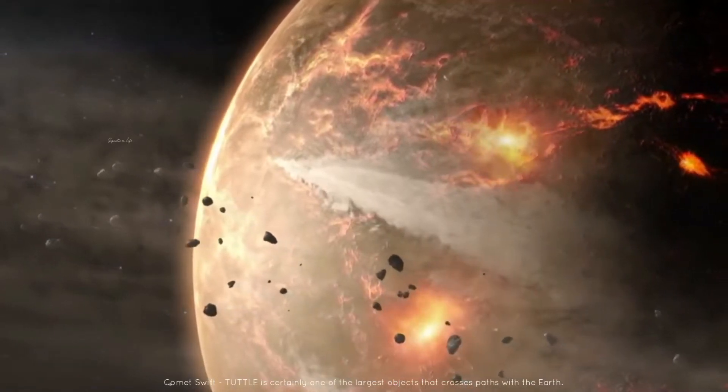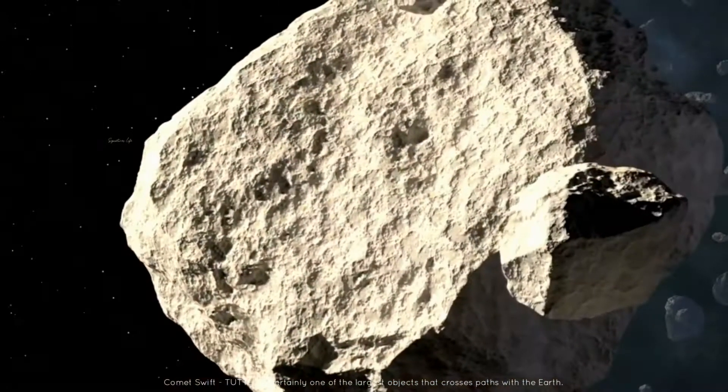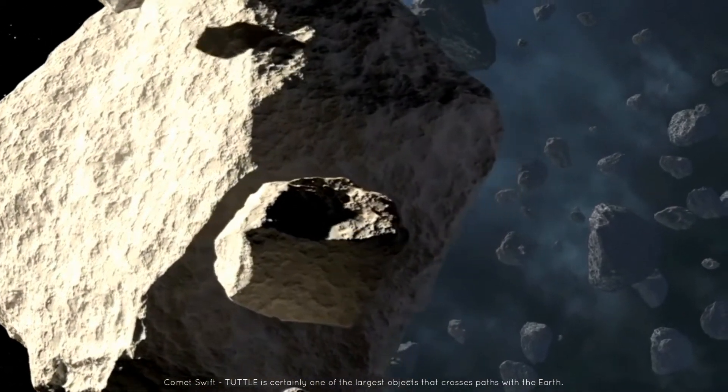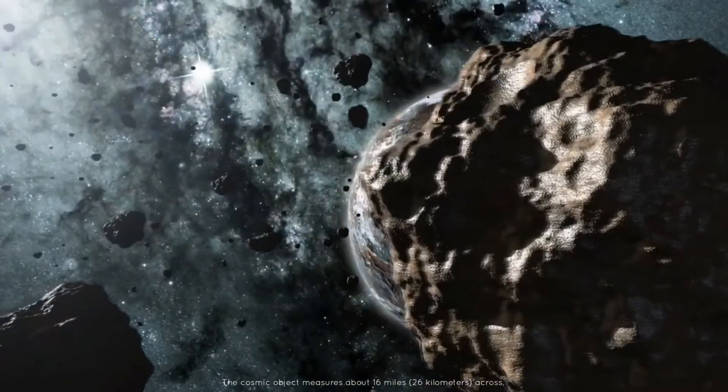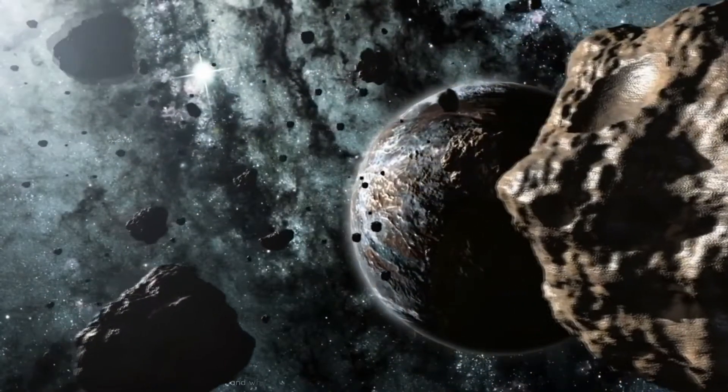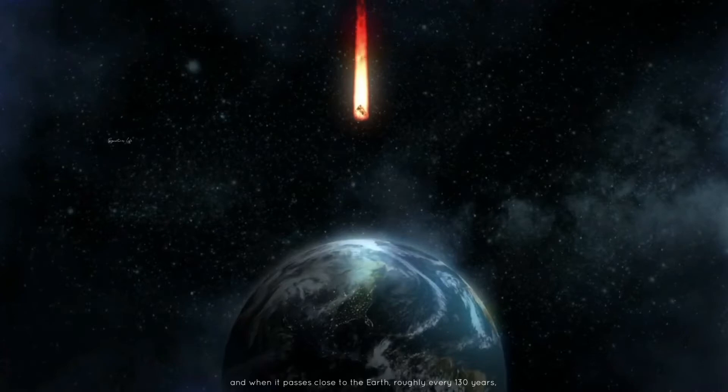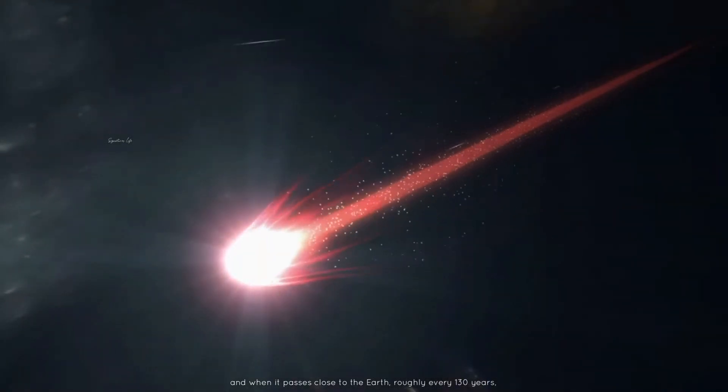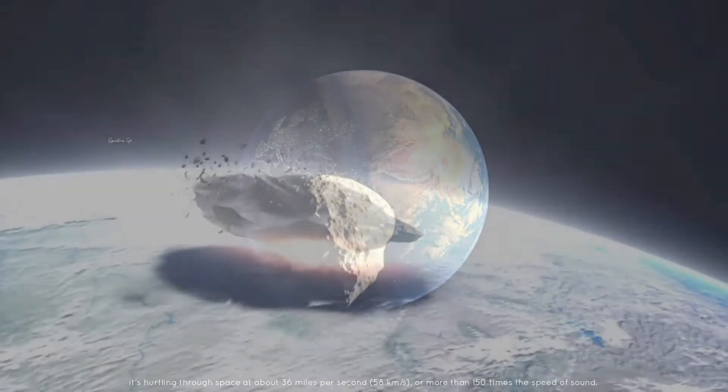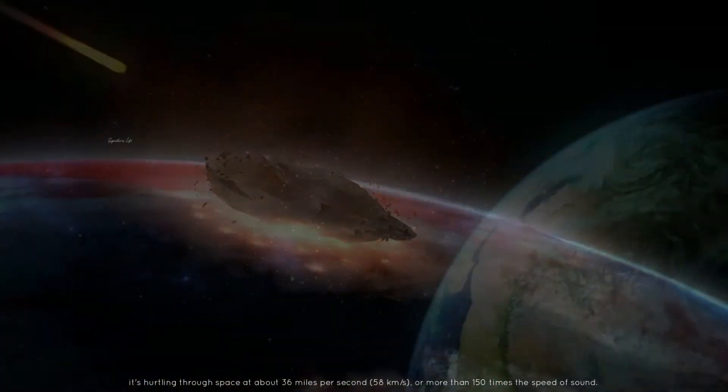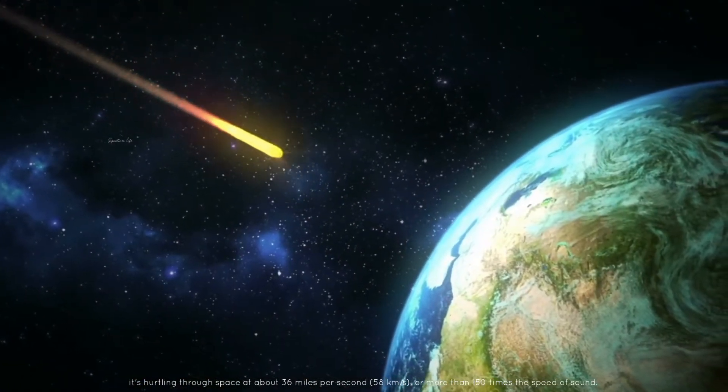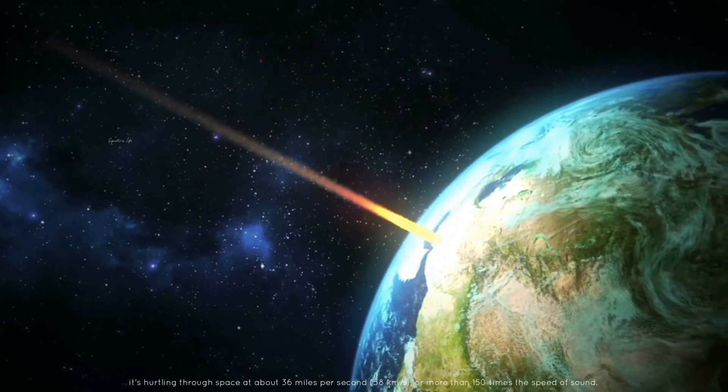Comet Swift-Tuttle is certainly one of the largest objects that crosses paths with the Earth. The cosmic object measures about 16 miles, or 26 kilometers across, and when it passes close to the Earth roughly every 130 years, it's hurtling through space at about 36 miles per second, or 58 kilometers per second, or more than 150 times the speed of sound.